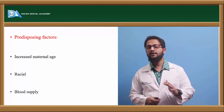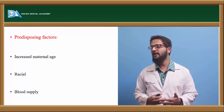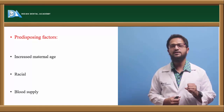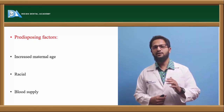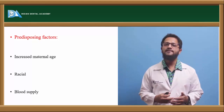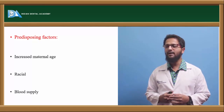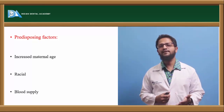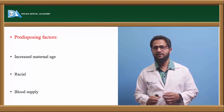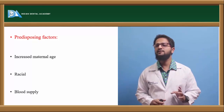Now, what are the predisposing factors — who are the people more prone to developing clefts? Predisposing factors are increased maternal age, race, and blood supply. Women who conceive after 35 years of age have more chances of giving birth to children with cleft lip and palate. Regarding race, Mongoloids are more commonly seen to suffer from clefts compared to other races. During embryonic development, if there is deprived blood supply to the developing organs, particularly the nasomaxillary region, it will result in the occurrence of clefts.